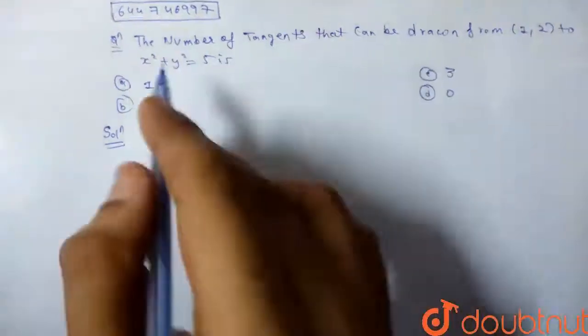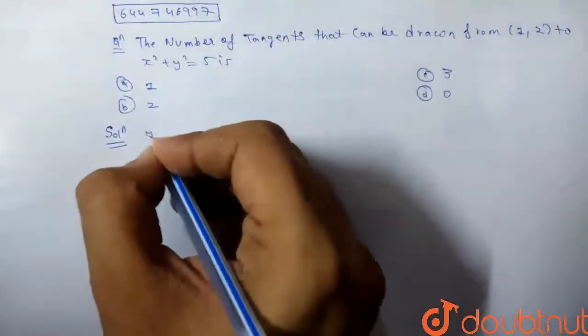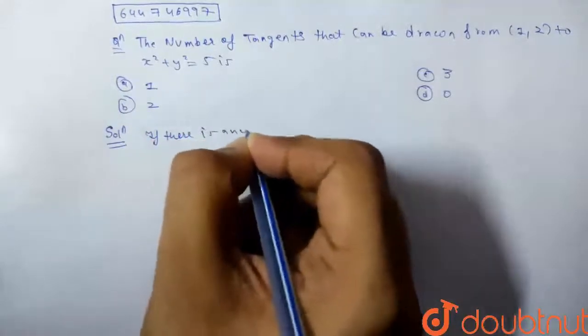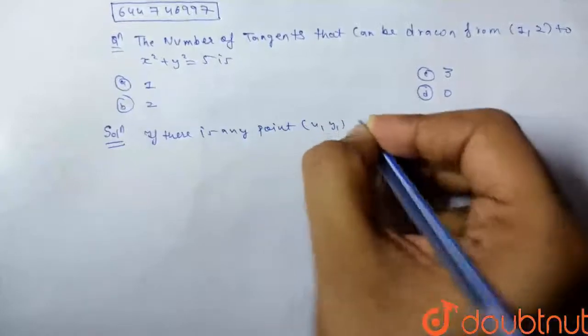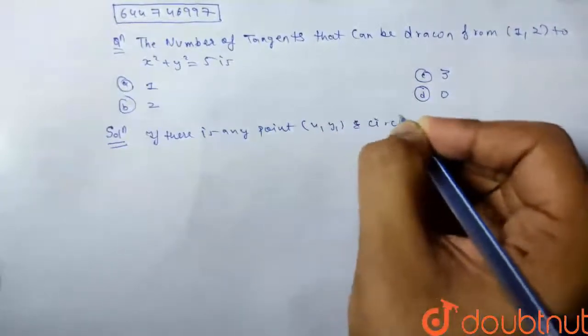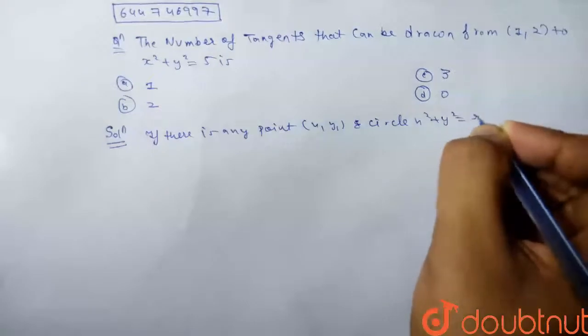We will find the location of the point with respect to the circle. If there is any point (x₁, y₁) and circle x² + y² = r²,